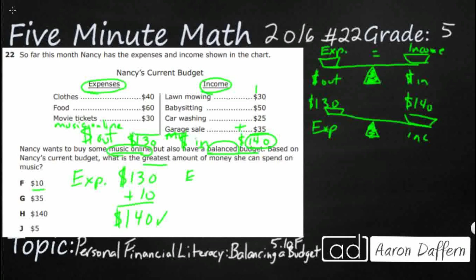Her expenses are $130. What if she wants to add $35? I have a feeling that's going to be too much. $130 plus $35 is $165. Yeah — $165 in expenses but only $140 in income. That is no good, so that's not going to happen. Option H, $140 — we're going to say no on that one, that's way too big. $5 would work, but $5 only gets you to $135, and that's going to be too small. We want the greatest amount, so our answer here is F.